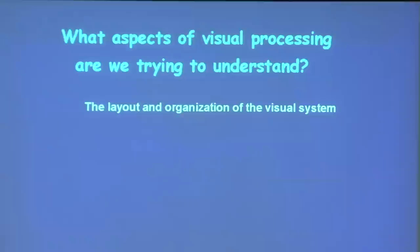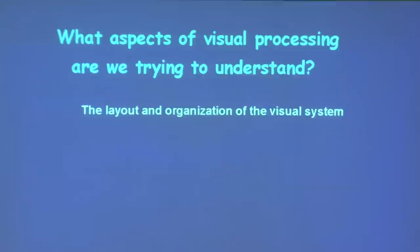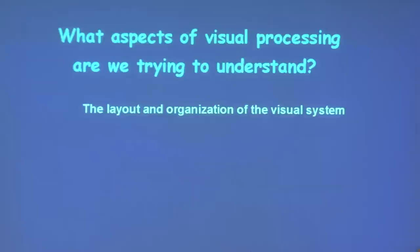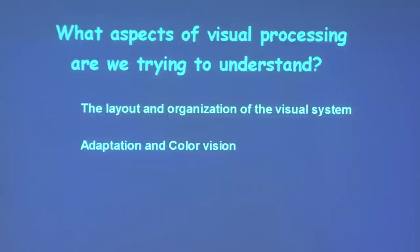For several lectures we will talk about the layout and organization of the visual system itself, mostly as it applies to higher mammals — in particular monkeys, primates, and humans. Then we are going to talk about specific aspects of visual processing: how we adapt in vision, how we are able to perceive and accurately process colors, how we are capable of analyzing motion, and depth perception.